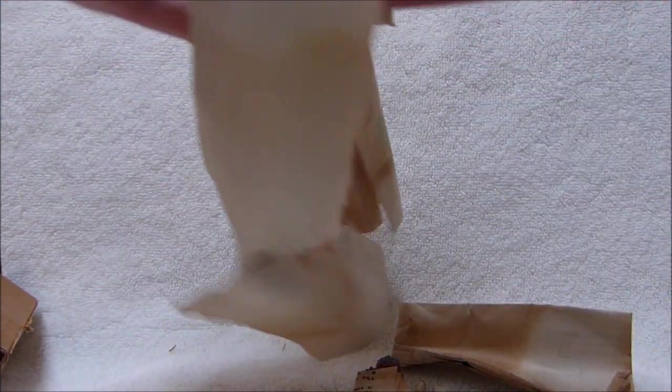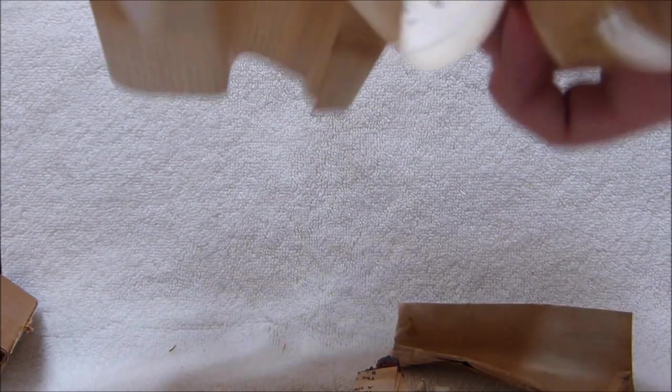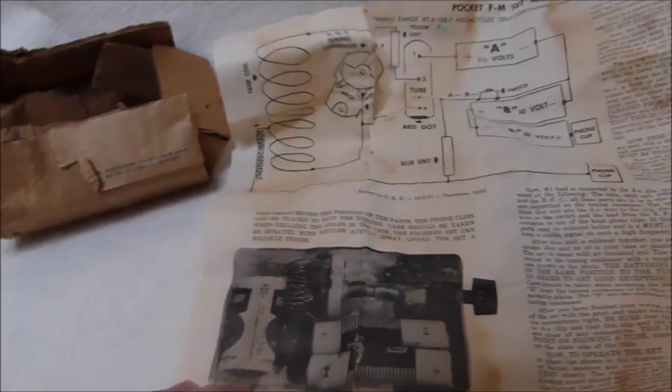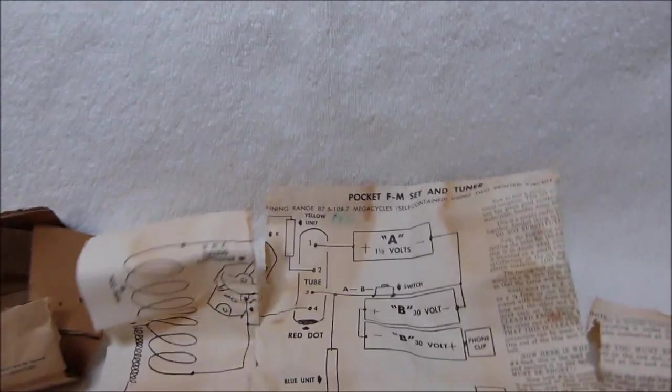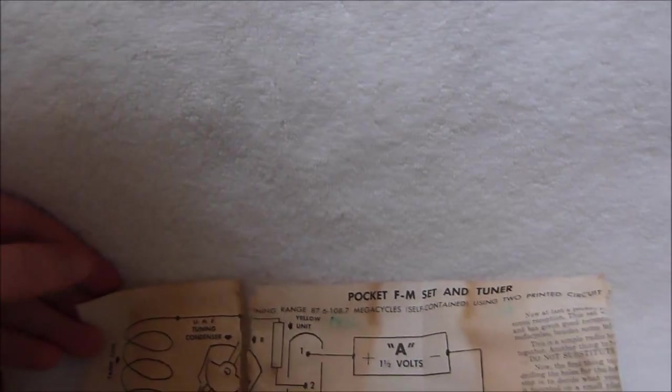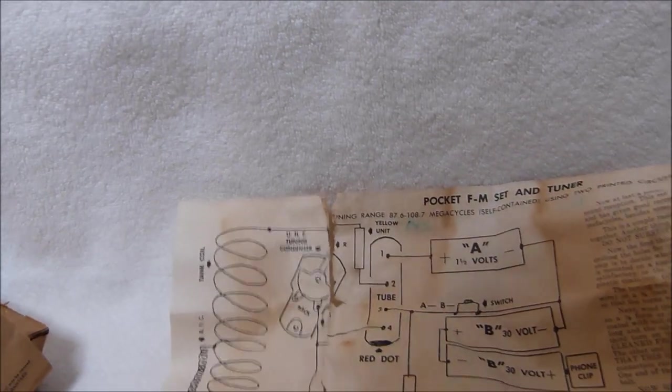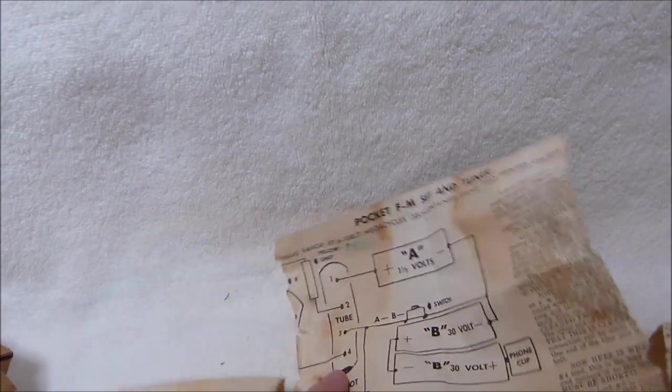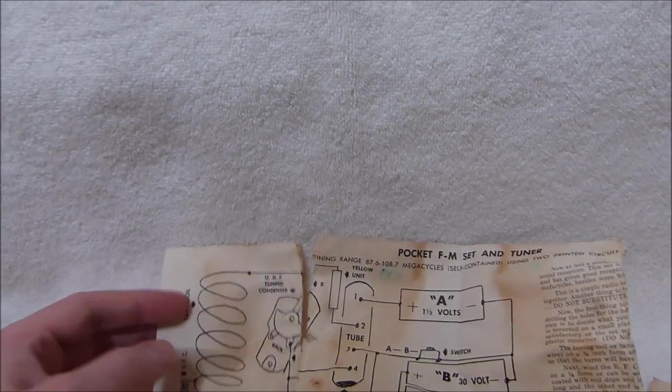This is pretty disintegrated. It's never been opened before and it's just falling apart here. Let's see if I can get it open to read without just destroying it entirely. So these are the instructions for the kit that I just opened. So it's a pocket FM set and tuner. I wonder how well this thing could possibly work. It just has a single tube, which is really not much for tuning the FM band.